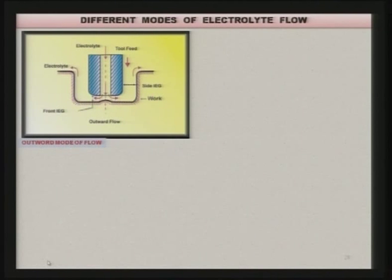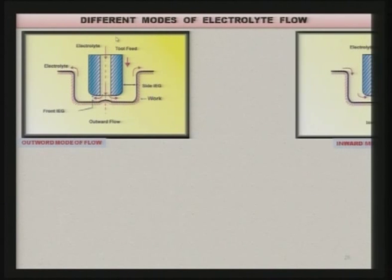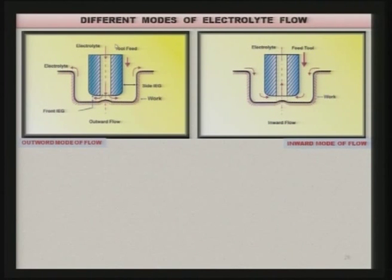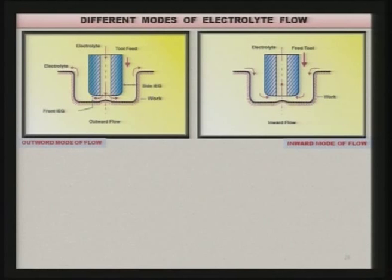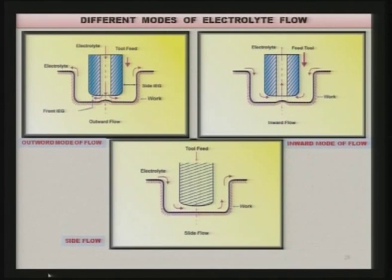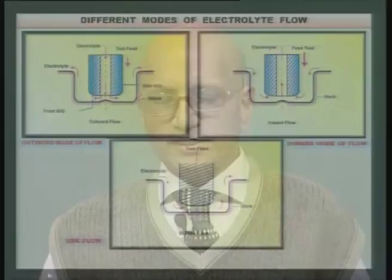In the outward mode, electrolyte enters through the center and exits from the sides. In the inward mode, electrolyte enters from the sides and exits from the central hole of the tool. In the third case — side flow — electrolyte enters from one side and exits from the other side of the tool. In all three modes, the entry and exit points of the electrolyte are different.